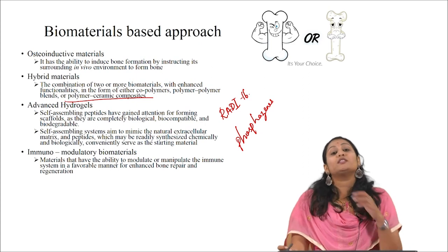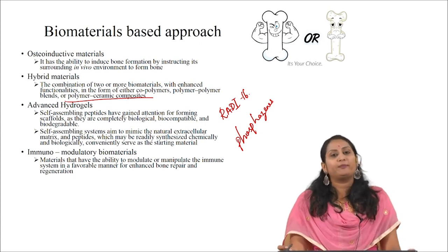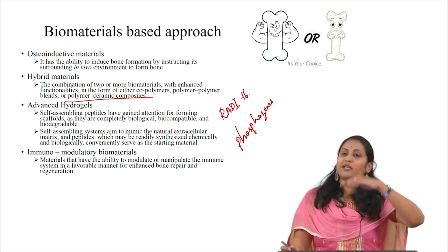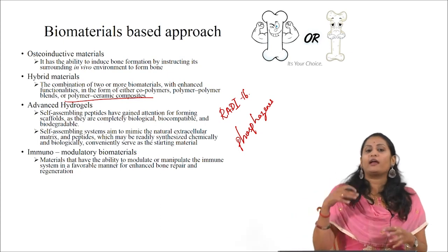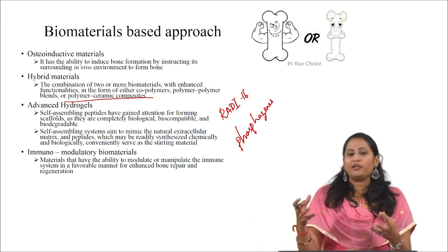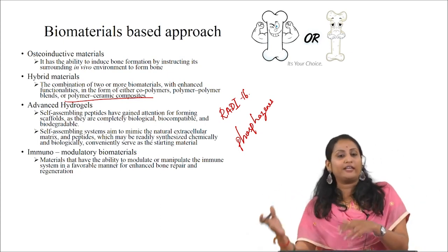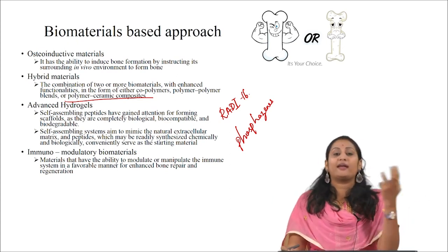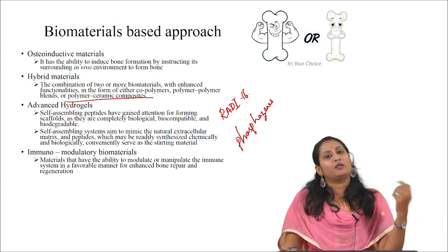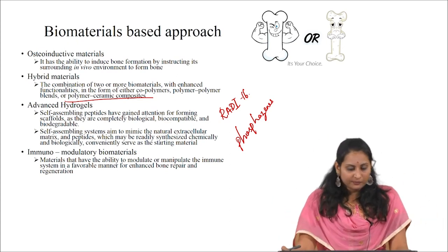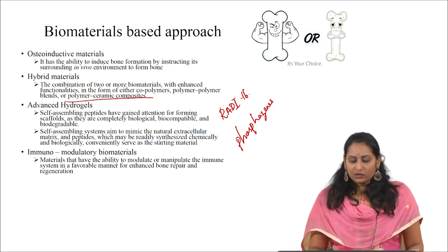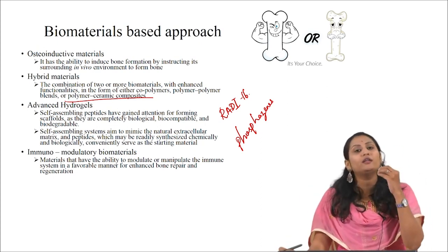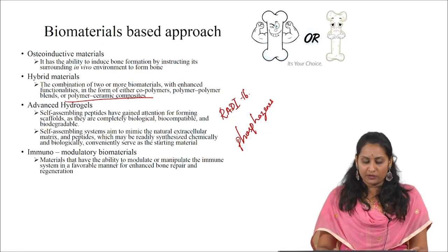The final category is immunomodulatory biomaterials. In order to suppress immune reactions, we can develop a biomaterial that can modulate or manipulate the immune system in a favourable manner for the enhancement of bone regeneration. This covers the biomaterials-based approach, where I will focus mainly on scaffolds.